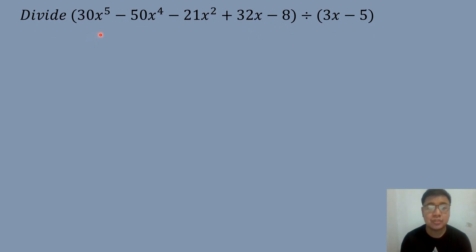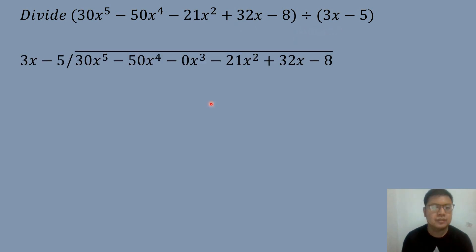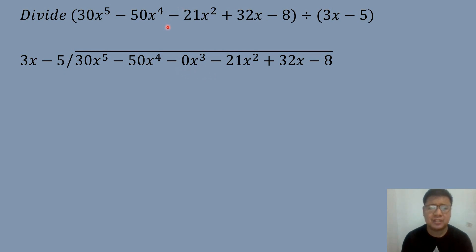So let's have our last example. Divide 30X to the fifth power minus 50X to the fourth power minus 21X squared plus 32X minus 8, divided by 3X minus 5. Write it in long division form: 3X minus 5 as divisor, dividing into 30X to the fifth power minus 50X to the fourth power. We insert 0X cubed because the third degree term is missing between the fourth degree and second degree terms, then continue with negative 21X squared plus 32X minus 8.